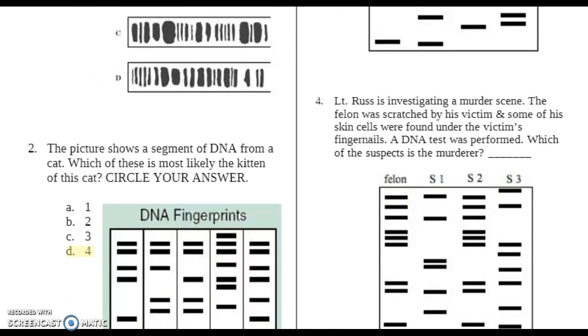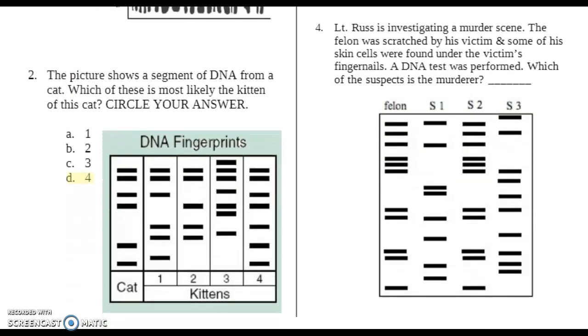Okay, number four. Lieutenant Russ is investigating a murder scene. The felon was scratched by his victim, and some of his skin cells were found under the victim's fingernails. A DNA test was performed. Which of the suspects is the murderer? So this band right here, this column, this is the crime scene evidence. So we've got to find which of the suspects matches up with the crime scene evidence.